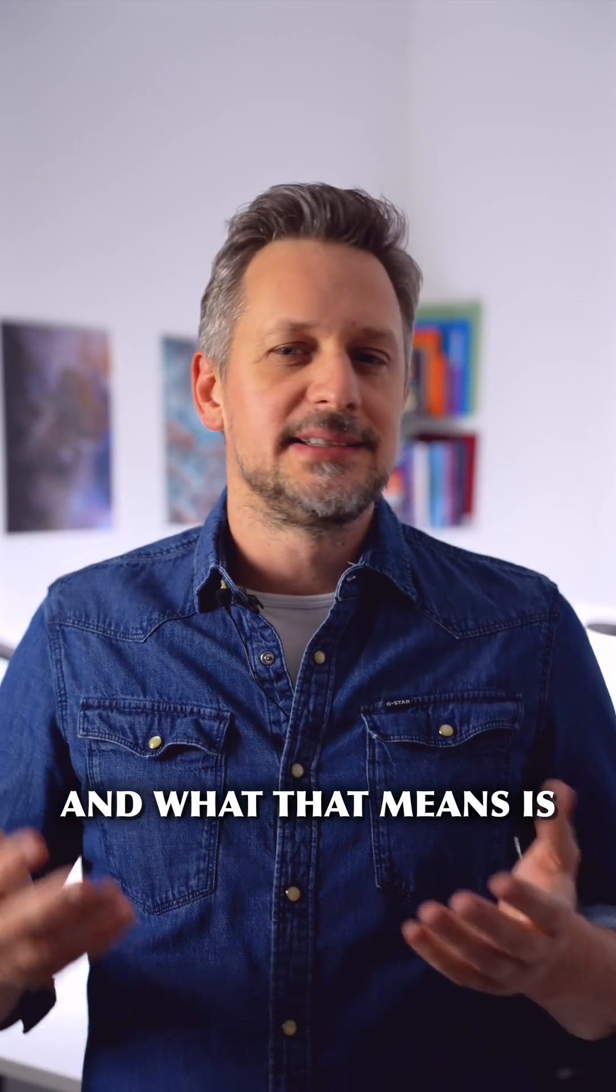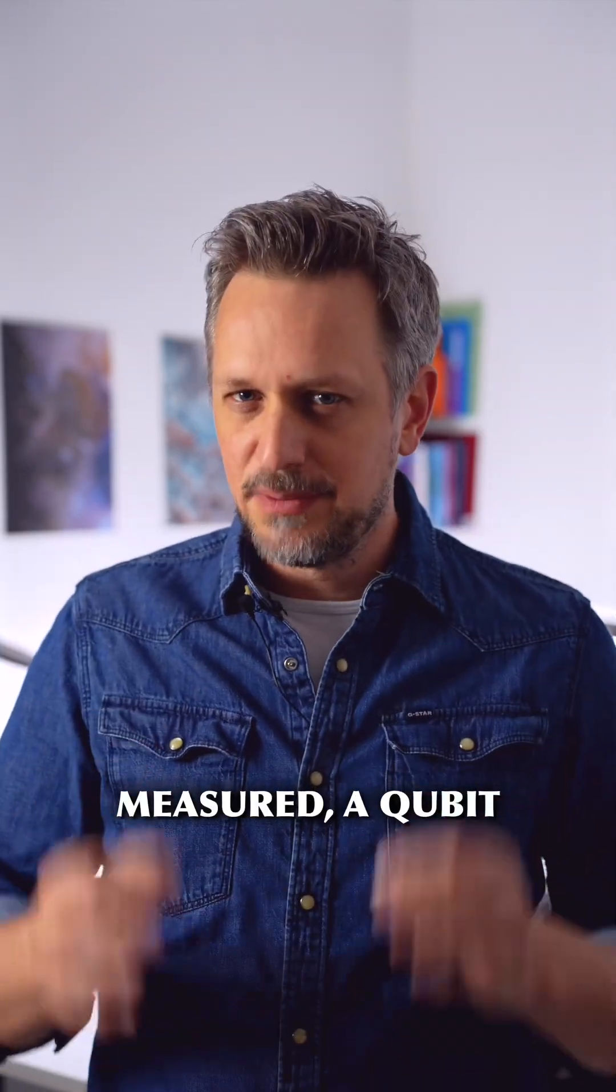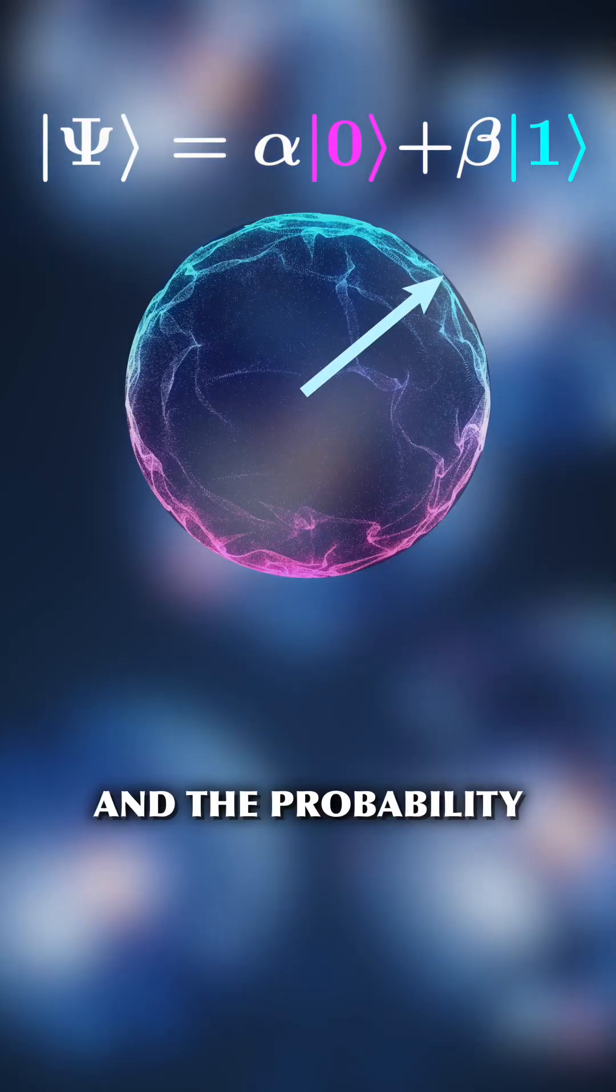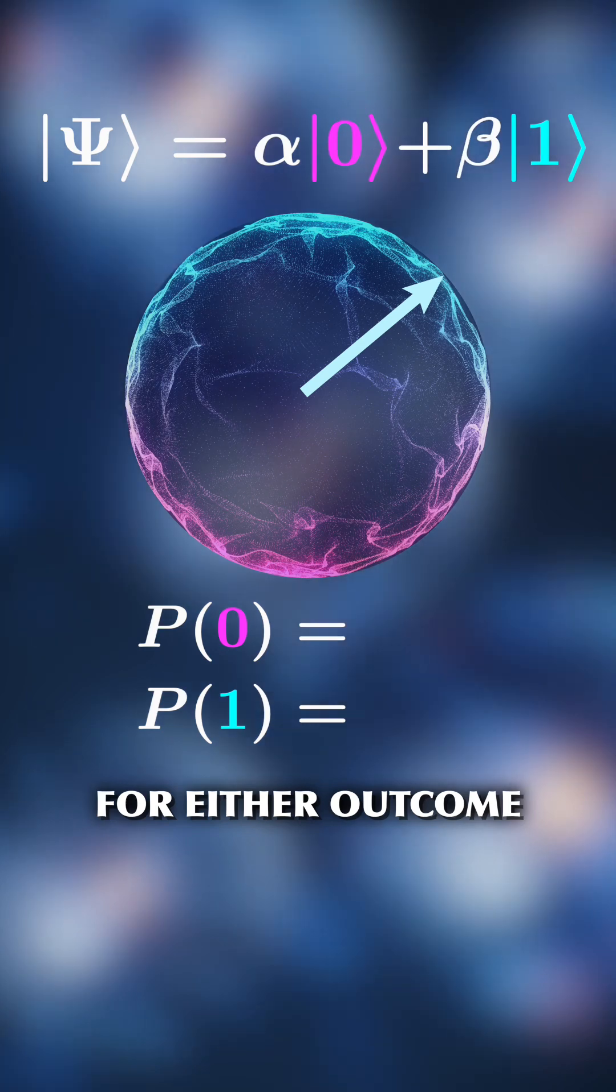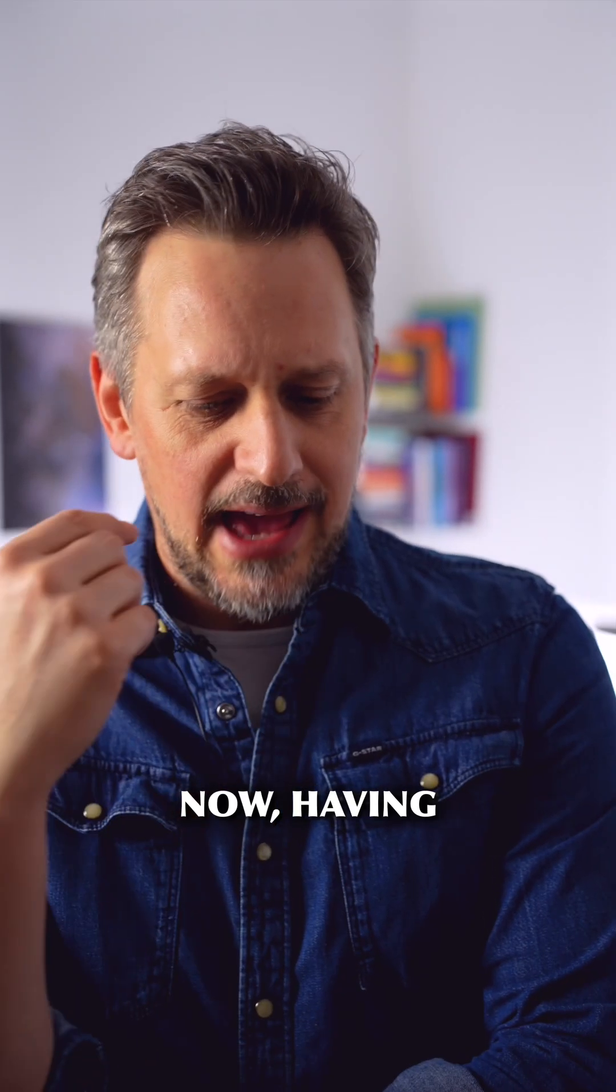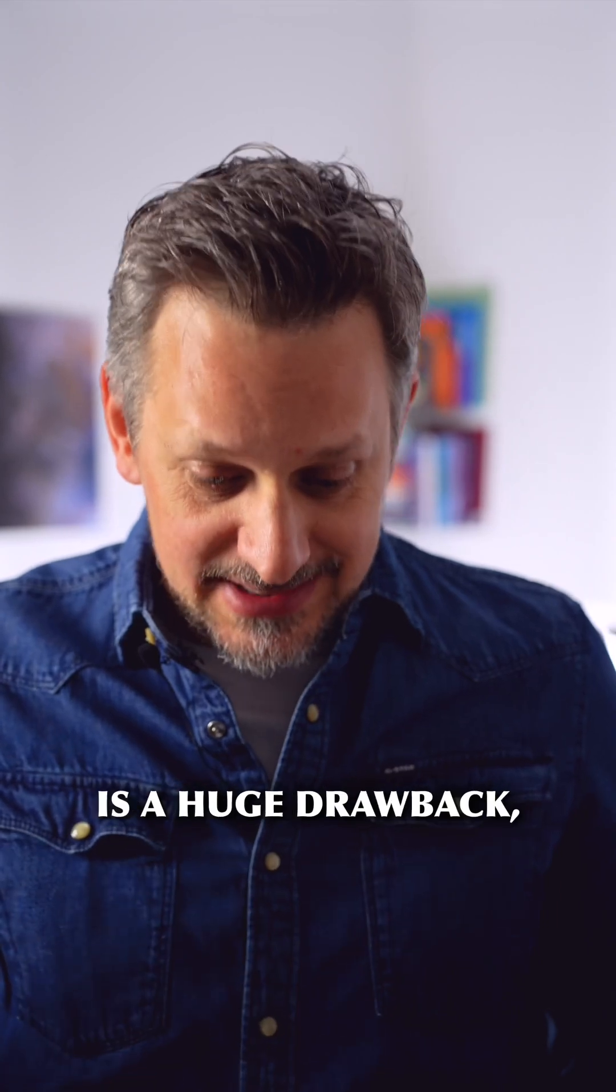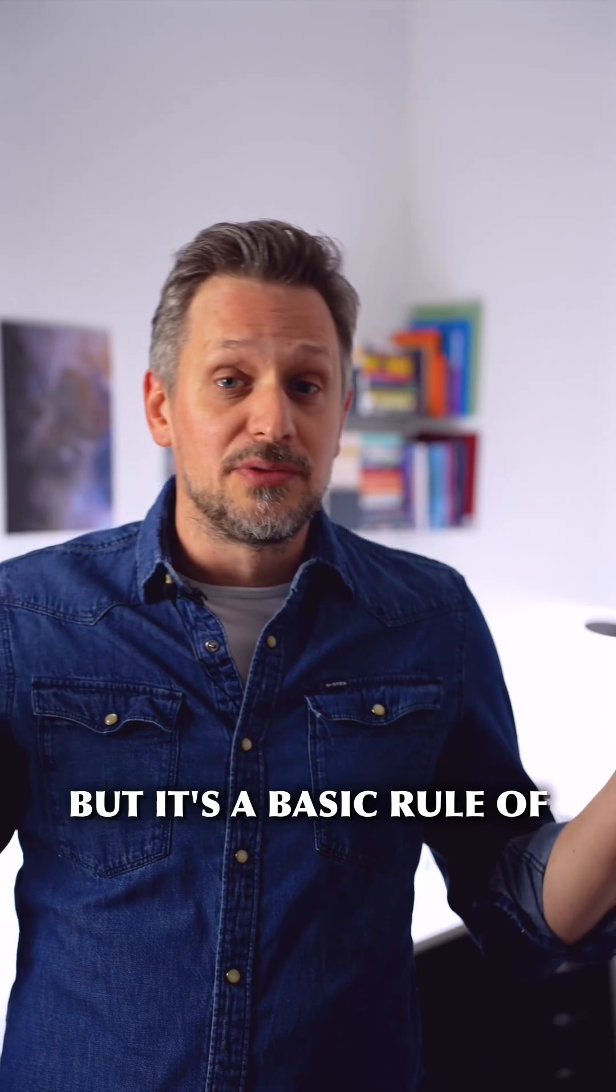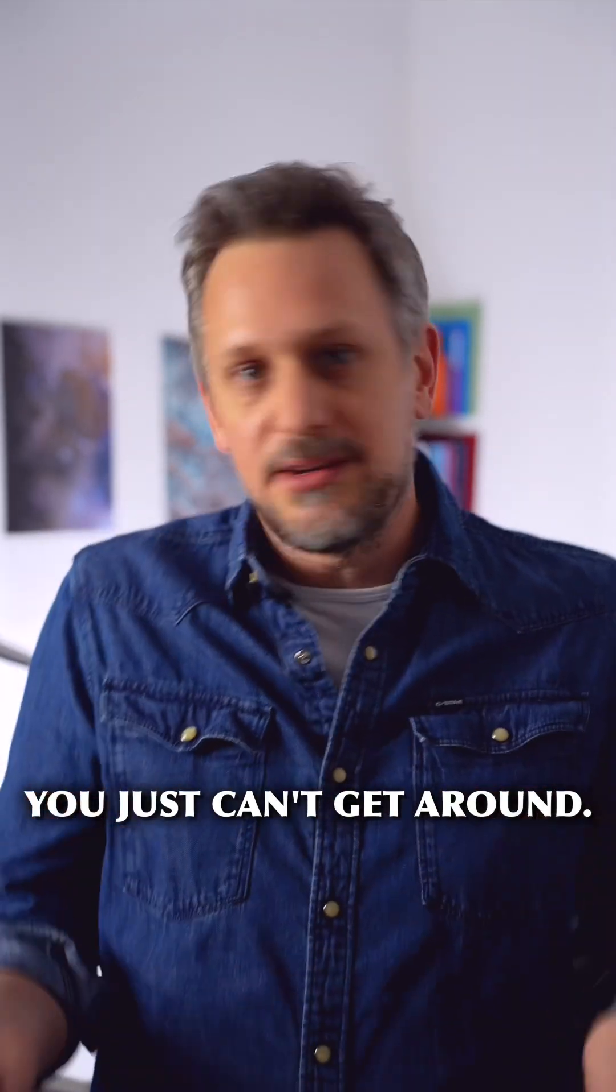And what that means is that whenever it's measured, a qubit randomly becomes either zero or one. And the probability for either outcome is given by these two numbers. Now, having random output is a huge drawback, actually. Nobody wants that. But it's a basic rule of quantum mechanics that you just can't get around.